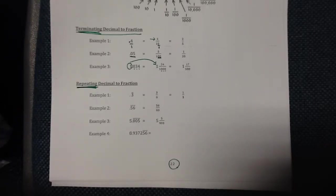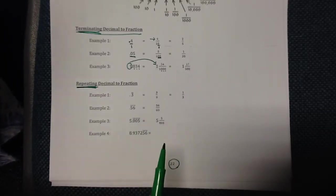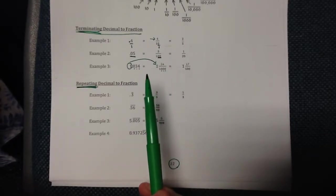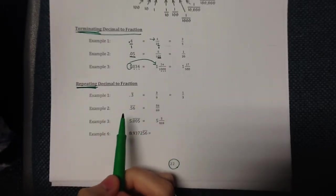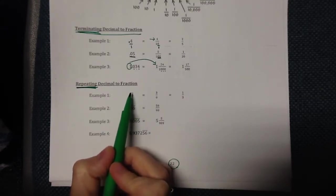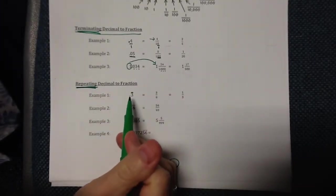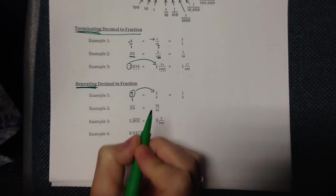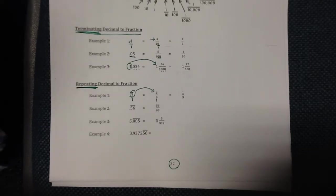Now if you have a repeating decimal, that's going to be a little different. We call these our magical nines. If you have a repeating decimal, you're going to use a nine, or ninety-nine, or nine hundred and ninety-nine on the bottom — not tens, hundreds, or thousands. Here we have point three repeating. We look at how many numbers are under the repeat bar. There's only one number under it, so we put three on top and one nine on the bottom.